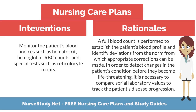Intervention: monitor the patient's blood — hematocrit, hemoglobin, RBC counts — and special tests such as reticulocyte counts. Rationale: a full blood count is performed to establish the patient's blood profile and identify deviations from the norm from which appropriate corrections can be made. Comparing serial laboratory values is necessary to detect changes in the patient's condition before they become life-threatening and to track disease progression.